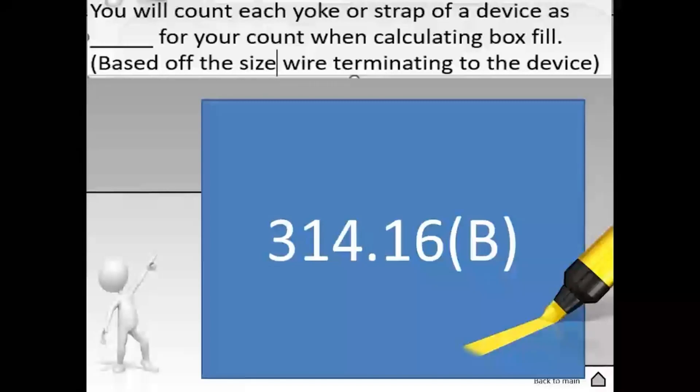When we get to B4, I want you to highlight the words in the first line, each yoke or strap. And then in the second or third line, depending on your code cycle, I want you to highlight the words double volume allowance.